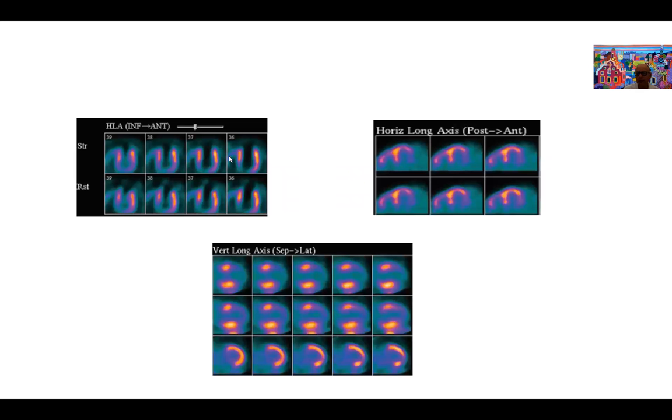Here are examples on the left upper hand side: you can see a fixed defect from rest to stress, and we presume that this area in the LAD territory, the apical anterior wall, is all infarcted because there's no change from rest to stress and no evidence of ischemia. Similarly on the right hand side, we see a large lateral defect involving the lateral wall in rest and stress images, and this could represent scar too.